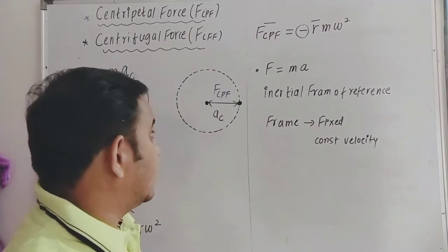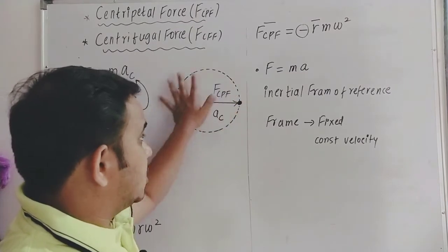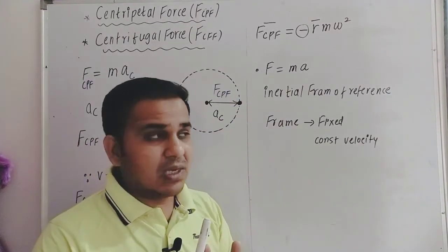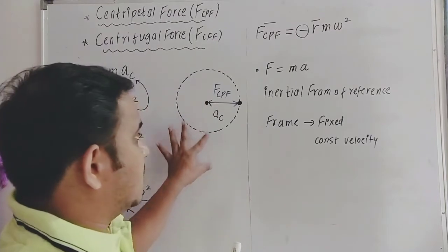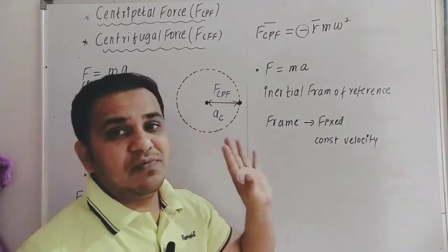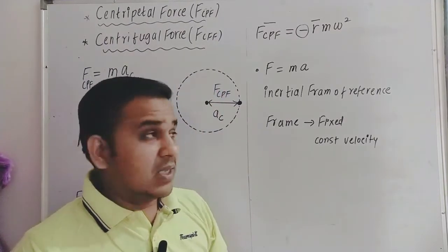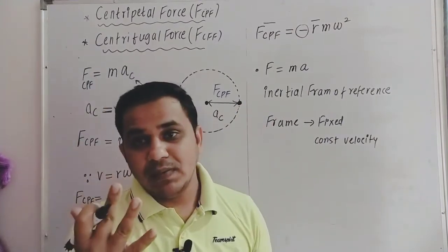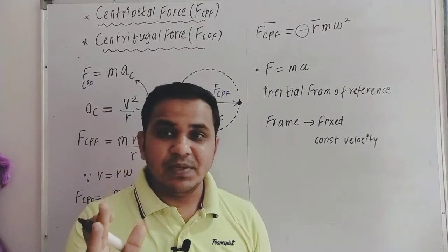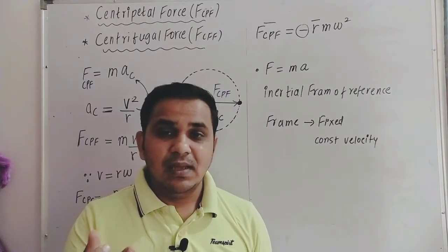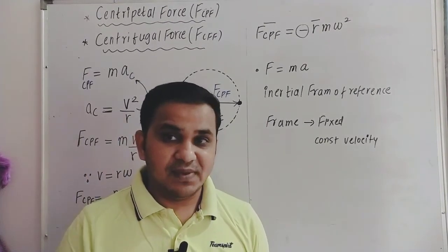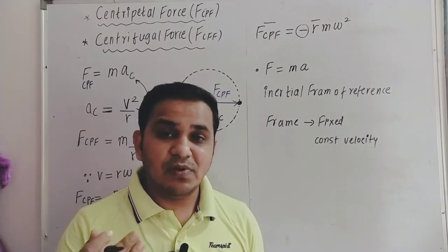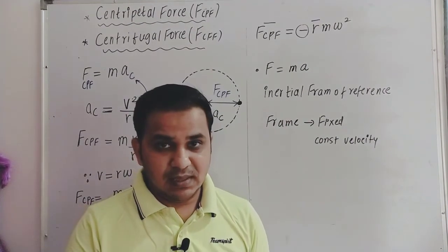If I am standing on the ground observing this circular motion, then the ground is fixed and I am also fixed. So the event I am observing is in an inertial frame of reference, where Newton's laws are valid. This gives a third point: centripetal force arises in an inertial frame of reference.